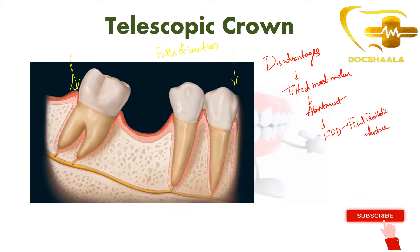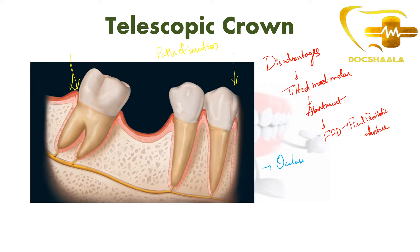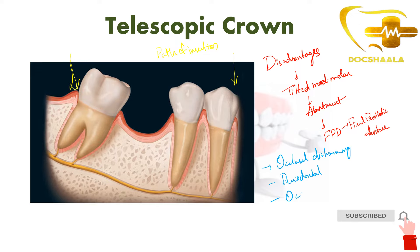This rocking of the prosthesis causes the patient to experience occlusal disharmony. This occlusal disharmony may further lead to periodontal problems, occlusal wear of the opposing tooth, and sometimes pain in the associated jaw.